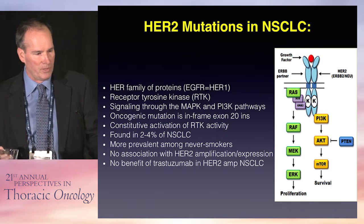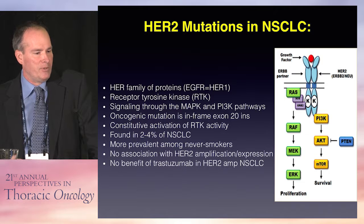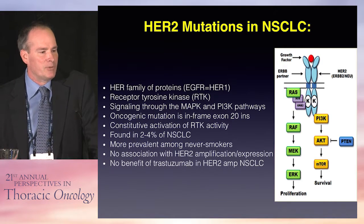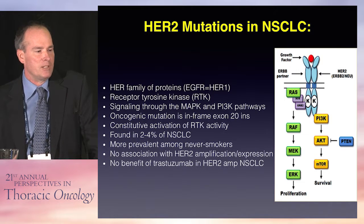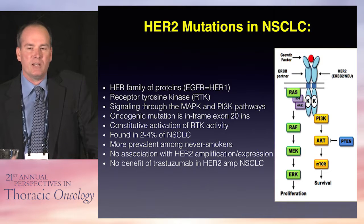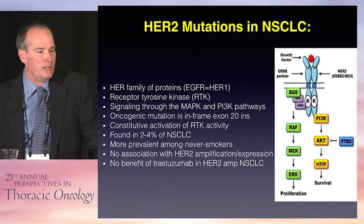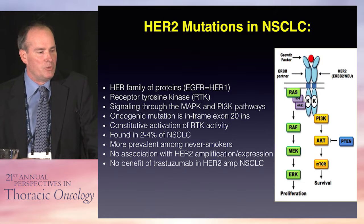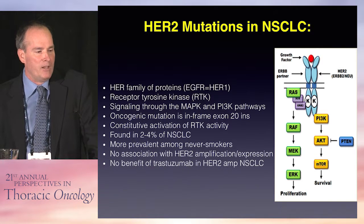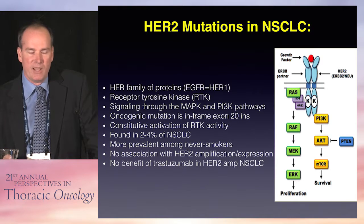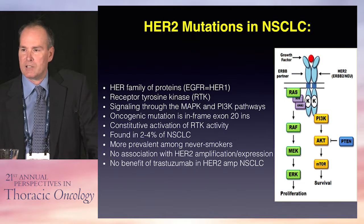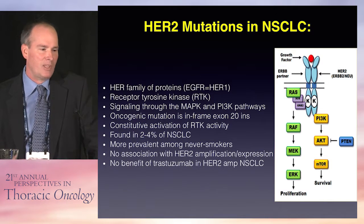HER2 is obviously a protein we know a lot about in the world of breast cancer and GI cancers. It's a member of the HER family of proteins — EGFR is HER1, this is HER2. It's a receptor tyrosine kinase that stimulates signaling through the MAP kinase and PI3 kinase pathways. Oncogenic mutations in lung cancer are usually an in-frame exon 20 insertion, causing constitutive activation of the tyrosine kinase activity. It's a rare mutation found in about 2% to 4% of non-small cell lung cancers and more prevalent in never-smokers. Interestingly, there's no association between HER2 amplification and expression with that mutation. Trastuzumab doesn't really have any benefit in HER2-amplified non-small cell lung cancer, so it's not as simple as it is in breast cancer.